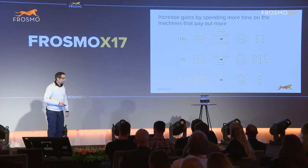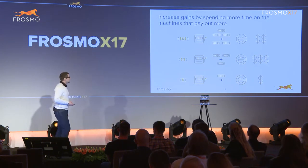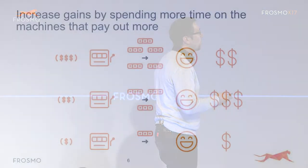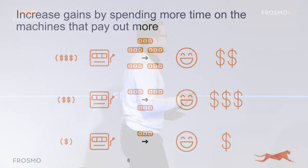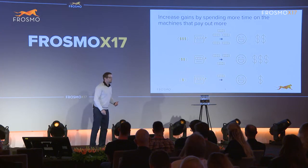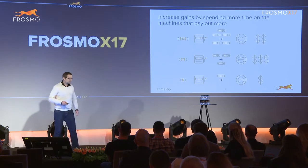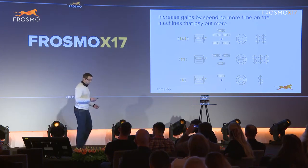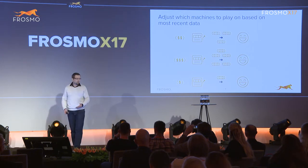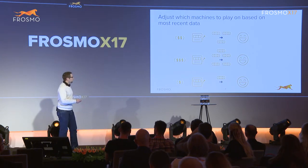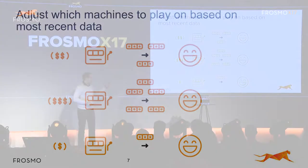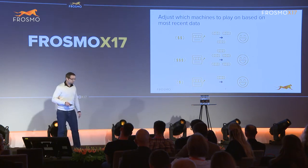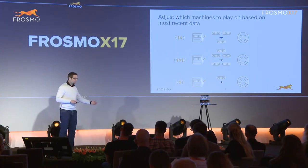Then you adjust your behavior. You remember that the first one gave you more, so you play it more. But you still want to test the other ones to see if those could be better than the currently best one. In this case, the second slot machine gives you more, so you adjust your behavior again and start playing the second slot machine more — but always retaining some exploration of the other ones to see if those could be better.